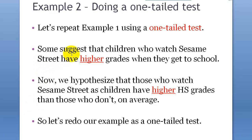Let's quickly do the one-tailed version of the problem. So it's basically the same problem, same setup, but in this case we hypothesize that those who watch Sesame Street as children have higher high school grades than those who didn't, on average. So let's redo our example as a one-tailed test.